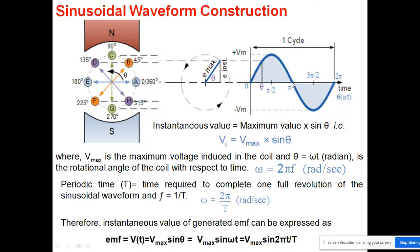Then the EMF increases again but goes in the negative direction. At 270 degrees, this becomes maximum in the negative direction, and moving toward 360 degrees, the value again becomes zero, where again our velocity direction and magnetic field are parallel.